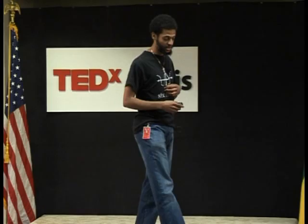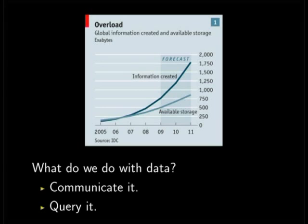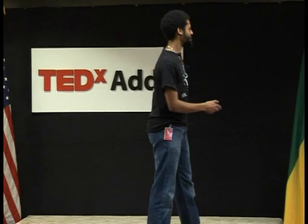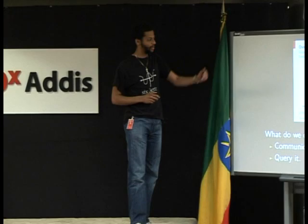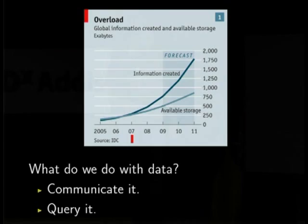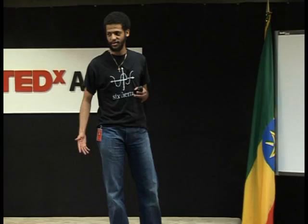There's another thing I want to show you, which I think is kind of interesting. This is a plot of the amount of information created every year versus the amount of available storage we have on Earth. By available storage, I mean add up all the hard drive capacities everywhere that everyone has. The top line is the amount of information created, in exabytes — a billion gigabytes per year — and right below it is available storage. As of 2007, we don't even have enough storage to store all the data we're generating.